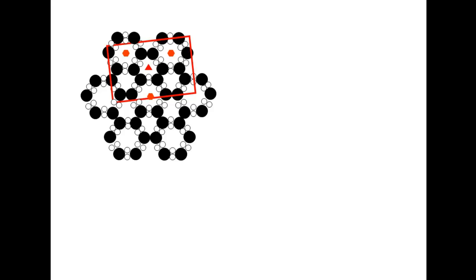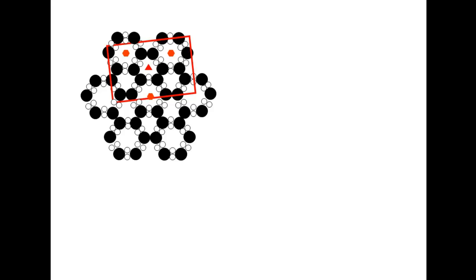Thus, to bring out the hexagonal symmetry of the structure, the box should be centered on one of the six-fold axes as shown in this final figure. Thank you for your attention.